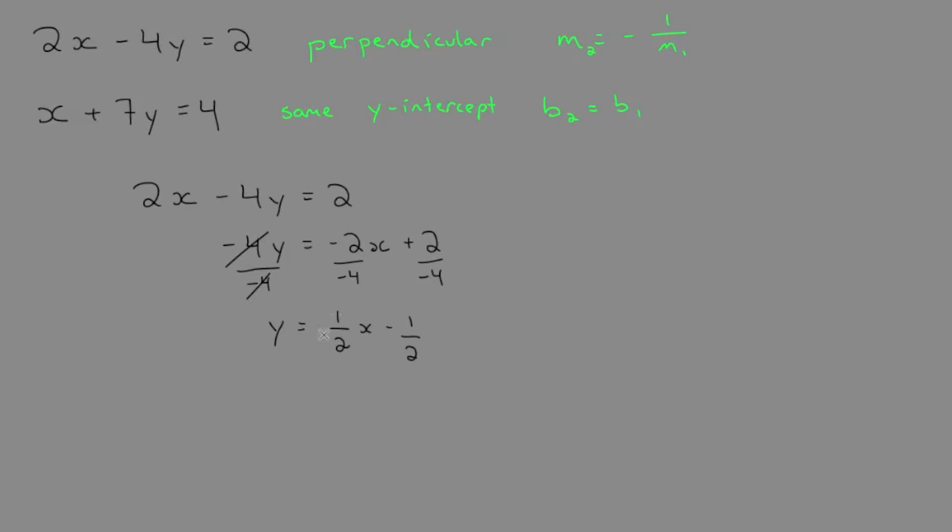You can see that our slope from equation 1 is 1/2. Now to take the negative reciprocal, if we flip 1/2, that becomes 2/1. The negative reciprocal becomes negative 2.